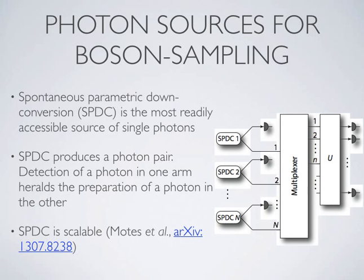The next thing we need is photon sources. The most readily available approach today is spontaneous parametric downconversion (SPDC). A nonlinear crystal is pumped with laser light and with some probability p emits a photon pair — one photon in each of two modes. You detect a photon in one arm, and if successful, you know there's a photon in the other arm due to the correlation. Using a bank of SPDC sources, you feed the heralded photons through a multiplexer to route them to the first N modes of the unitary and implement boson sampling. We proved in a recent paper that this architecture is scalable, though the multiplexing part is quite challenging.